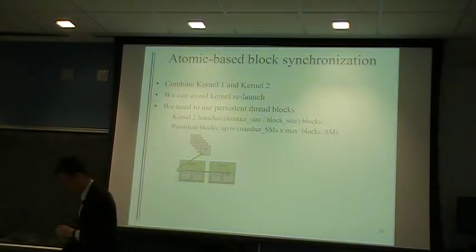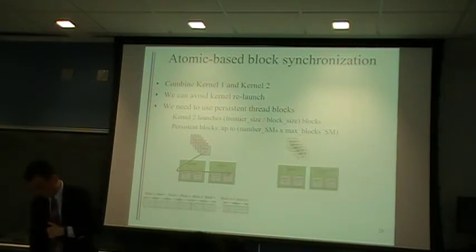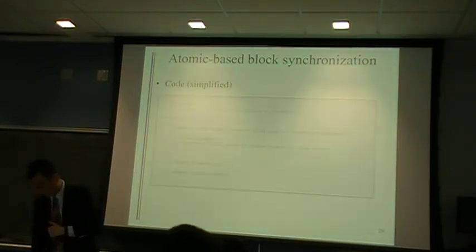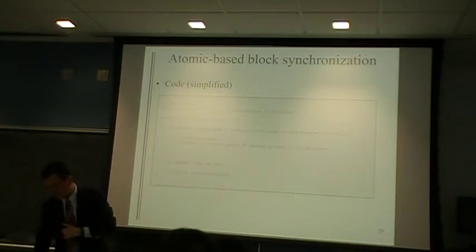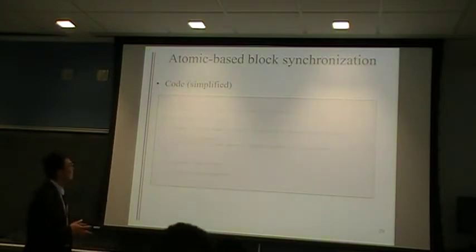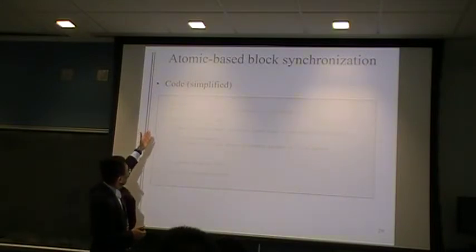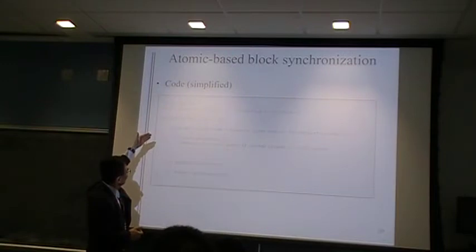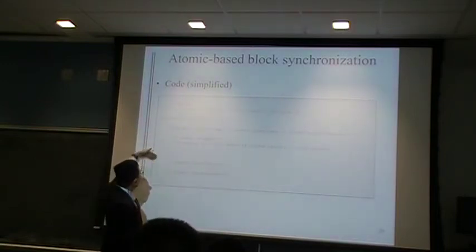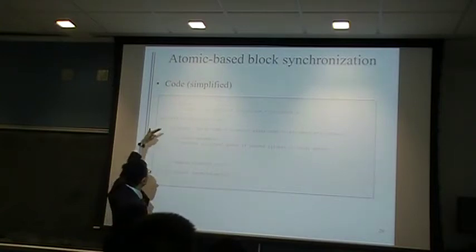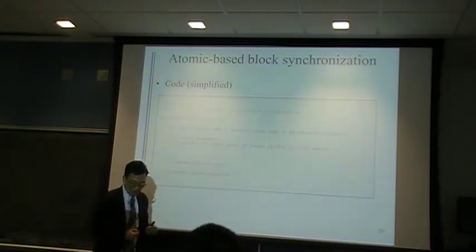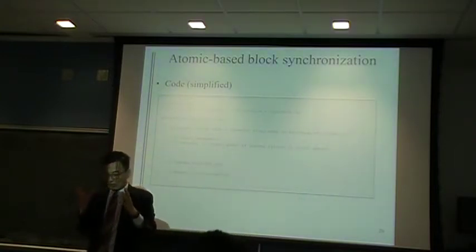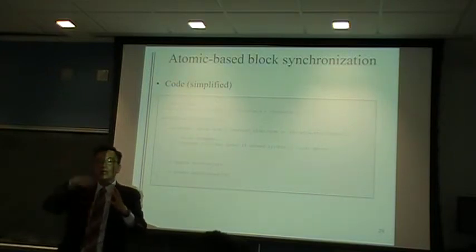So how does it work? When you have a breadth-first search using persistent thread blocks, the kernel would just have a big while loop, because all these thread blocks are going to be iterating, looking for work.